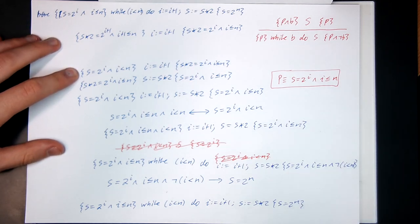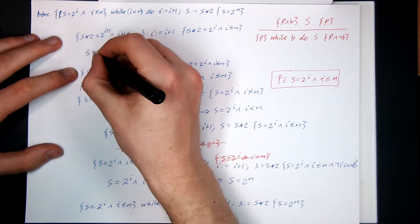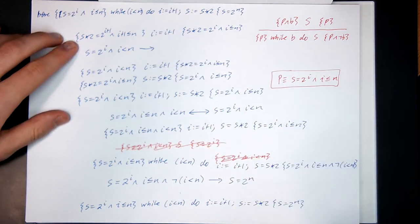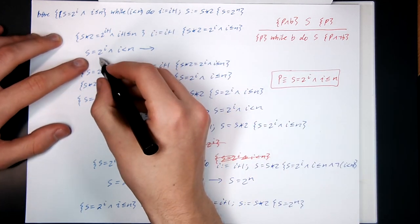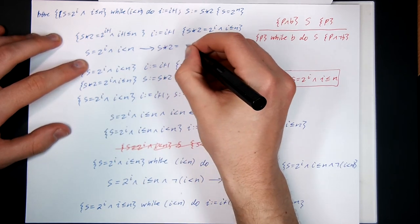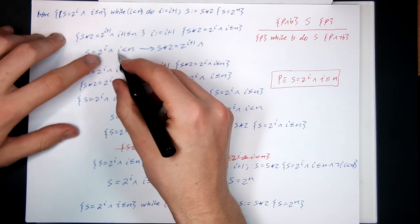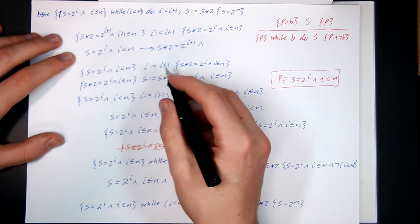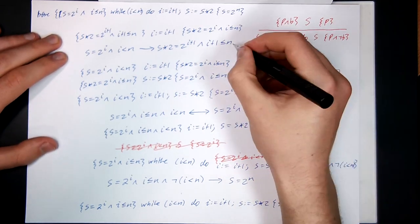How do we get from here to here? The only way to do that is by precondition strengthening. So if I assume this to be true, S equals 2 to the I and I strictly less than N, does that imply this condition up here? Well, it looks like it. Because I could take this term, multiply both sides by 2 and obtain S times 2 equals 2 to the I plus 1. And if I take this term, if I is strictly less than N then it ought to be the case that I plus 1 is less than or equal to N. So this is true by math.